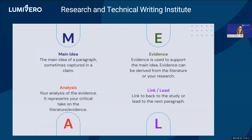M stands for main idea — this can sometimes be a claim. E is evidence — this is the evidence you're using to support that main idea or claim; it can be your research, or if it's a technical report, maybe anecdotal evidence or experience. A is your analysis of the evidence — this is what can be really time consuming. And the L stands for link or lead — that final couple of sentences could be linking what you've just provided to the main idea of your overall thesis, or just leading to the next paragraph as a transition sentence.